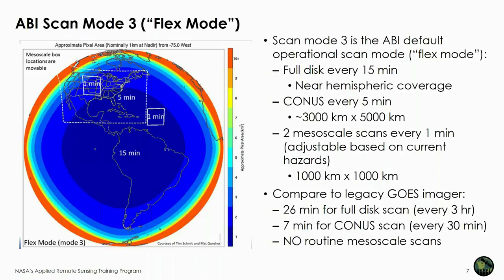Comparing this to the legacy GOES imager: we used to get a full disk scan every three hours, and it took 26 minutes to complete. The CONUS scan took seven minutes compared to five minutes now, but we only got one every 30 minutes. The temporal resolution was much lower with the legacy GOES imager, and we didn't have any routine mesoscale scans. We now have a much higher observation rate with the ABI.